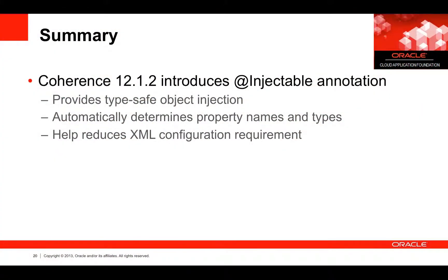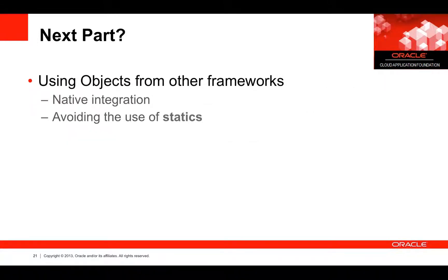In summary, in this part of the series we introduced the concept of injectables — the annotation used for setter methods introduced in Coherence 12.1.2. It provides type-safe injection of values based on the context in which objects are being used, and it will help you reduce the amount of XML configuration you need. In the next part of the series we're going to discuss using objects from other frameworks — in particular native integration with the frameworks we talked about on the first slides. This will help tremendously in avoiding the use of statics, which ultimately improves the testability of both your applications and Coherence.